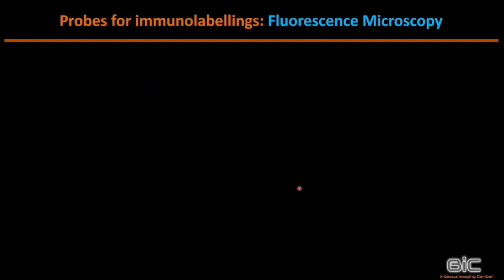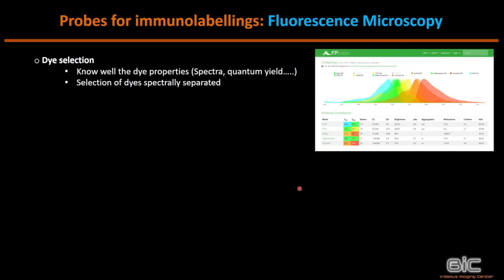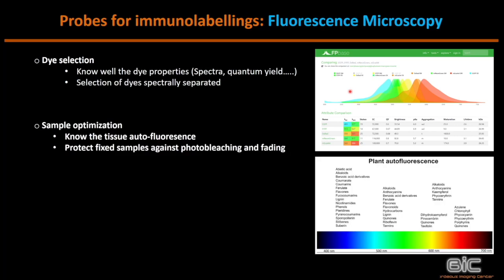In fluorescence microscopy, it is very important to select your fluorophore carefully, especially for multi-labeling. I strongly encourage using the FPbase spectra viewer tool, which is very convenient for checking spectral compatibility and contains a wide range of information about dyes and fluorescent proteins. It is also important to know your tissue: for example, in plants there are many sources of autofluorescence that must be taken into account when choosing your dye, to avoid crosstalk between autofluorescence and your label. You must also protect your sample against photobleaching using appropriate illumination and mounting media.